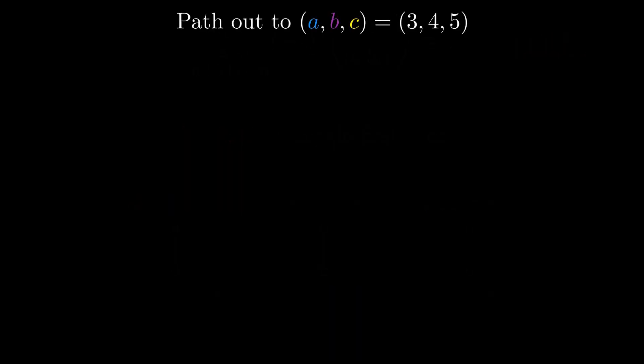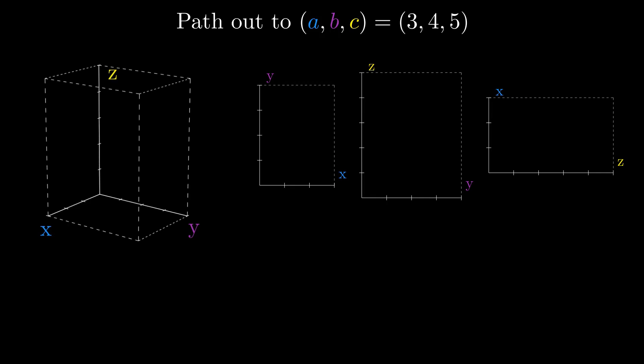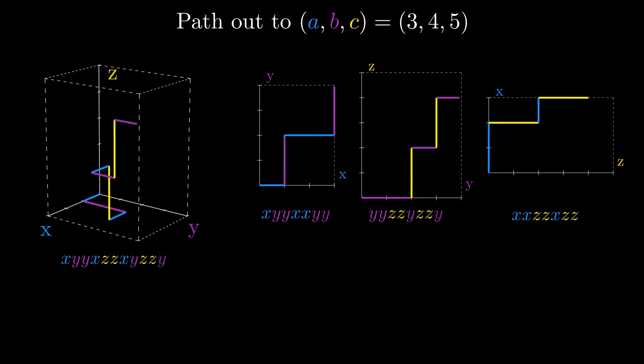Let's imagine an n-step path out to (a, b, c), but this time let's watch the path projected onto the xy, yz, and zx planes as we take each step. A step in the x direction shows up in both the xy plane and the zx plane. The next step in the y appears in xy and yz. When we get to them, steps in the z direction show up in yz and zx. Let's call a configuration where we have a path in the xy plane, another in the yz, and a third in the zx a triple path.